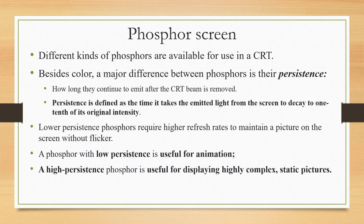Lower persistence phosphors require a higher refresh rate for the picture to be maintained, so we use low persistence phosphors for animation. High persistence phosphors are used for highly complex static pictures that don't change often.